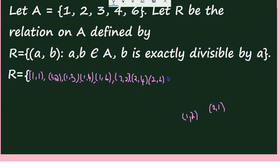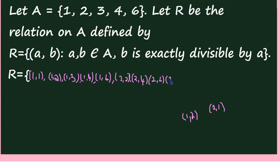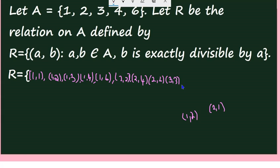Next, elements starting with 3: (3, 1) is not there, (3, 2) is not there. But (3, 3) is there. (3, 4) is not there. (3, 6) is there because 6 is exactly divisible by 3.